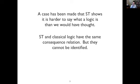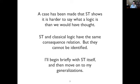The case has been made that strict tolerant logic shows it's harder to say what a logic is than we would have thought. Strict tolerant logic and classical logic turn out to have the same consequence relation. And since the days of Tarski, it's been common to identify a logic with its consequence relation for many purposes. That means that these two should be identified, but they can't be.